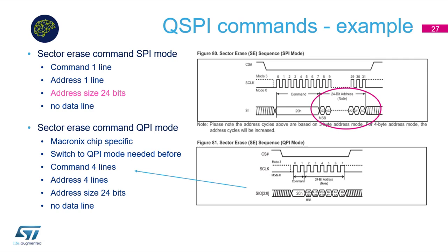For some memories the address could be 32 bits — it depends on memory size. The command can work either on one line or four lines. As you can see, four-line usage has better performance because the same instruction takes fewer clock cycles. If you decide to use four lines, it is necessary to enable Quad SPI mode beforehand.